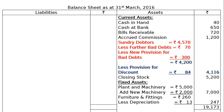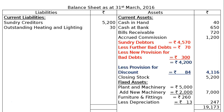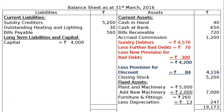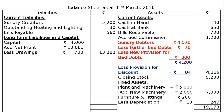The final asset total is Rs. 19,173. On the liabilities side, current liabilities include: sundry creditors Rs. 5,200, outstanding heating and lighting Rs. 30, and bills payable Rs. 560. Under long-term liabilities and capital: capital Rs. 4,000, add net profit Rs. 10,083, less drawings Rs. 700, giving a final capital figure of Rs. 13,383. Totalling the liabilities side gives Rs. 19,173, and this is the final answer.